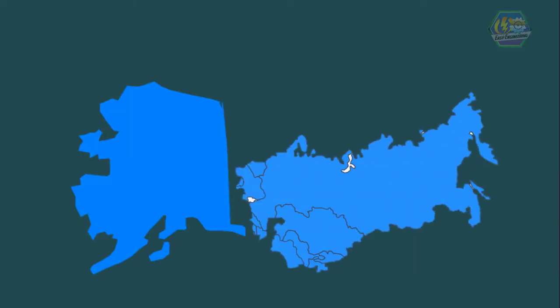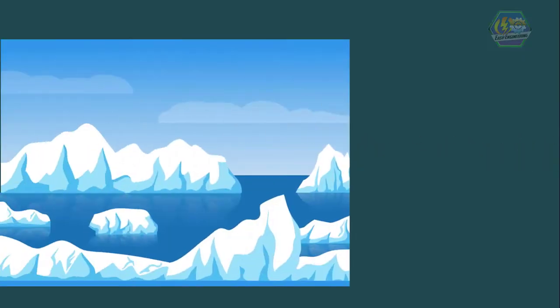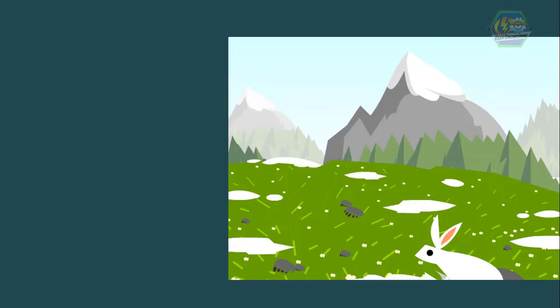It has long cold winters and cool summers. There are two kinds of Tundra. The first one is the Arctic Tundra, found at the far north along the Arctic circle in the northern areas of America, Europe, and Asia. The second one is the Alpine Tundra, which is high in the mountains above the tree line.